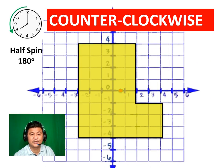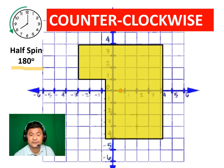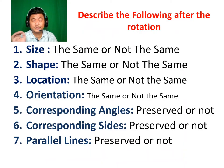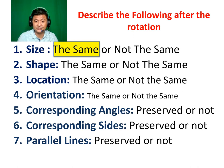Pre-image. We will now do a half spin, which is 180 degrees. So after the rotation, we will see whether the following is preserved or not. The size — we can say they are the same. Turning around doesn't change the size.